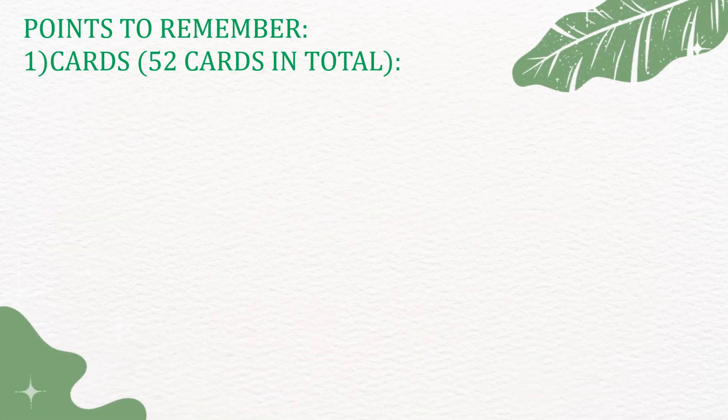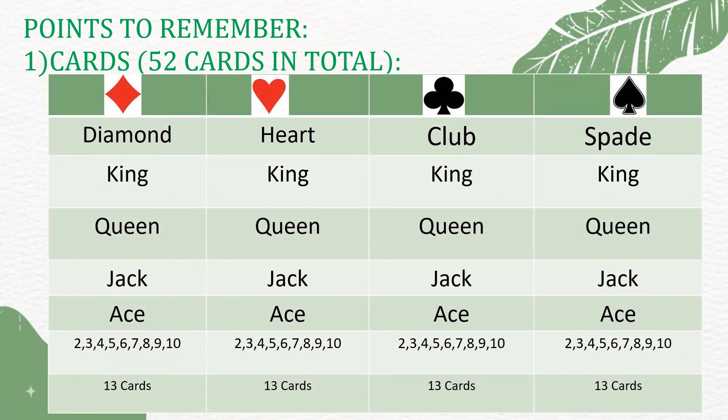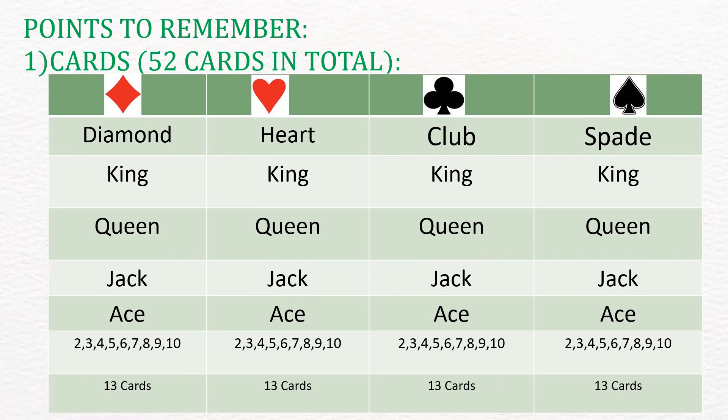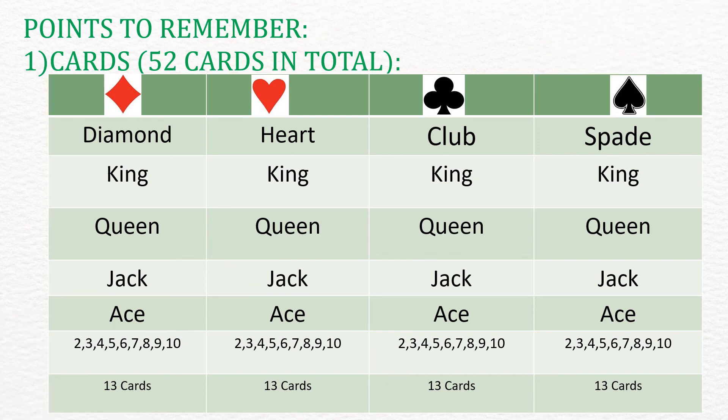Points to remember. 1. Cards. There are 52 cards in total. The 52 cards are divided into 4 packs: a pack of diamonds, a pack of hearts, a pack of clubs and a pack of spades. Each pack has a king, a queen, a jack and ace as well as number cards from 2 to 10. In total, there are 13 cards in each pack.